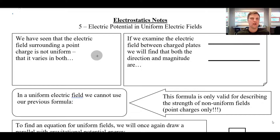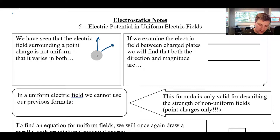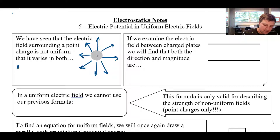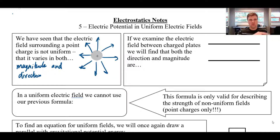Everything we've talked about so far involves point charges, like a little proton that is like a little point in space that might be surrounded by an electric field. The thing about those fields is that they're all non-uniform — they vary in both magnitude and direction.